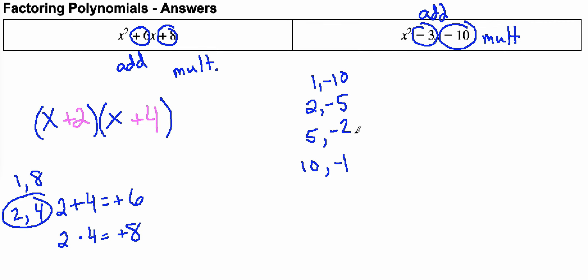So the two factors that will add to negative 3 are positive 2 and negative 5. That means when I write out my equation like this, I'm going to put in positive 2 and negative 5.